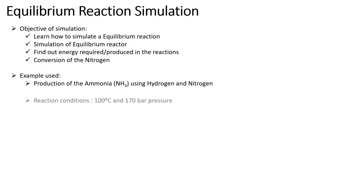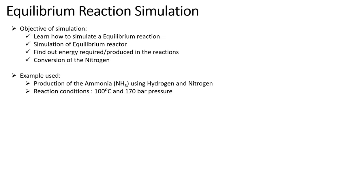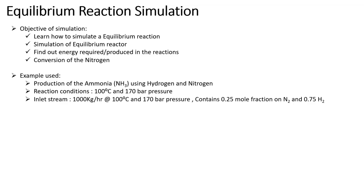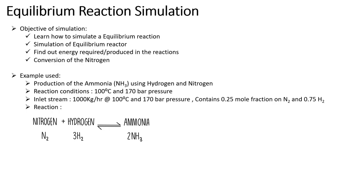The example we will use is the production of ammonia using hydrogen and nitrogen. Reaction conditions will be 100 degrees centigrade and 170 bar pressure. The inlet stream will be 1000 kg per hour at 100°C and 170 bar, containing 0.25 mole fraction of nitrogen and 0.75 mole fraction of hydrogen — because one mole of nitrogen reacts with three moles of hydrogen to produce two moles of ammonia. The equilibrium constant we are going to consider is 1.2 bar.